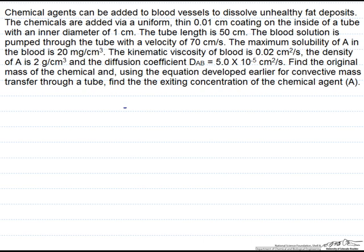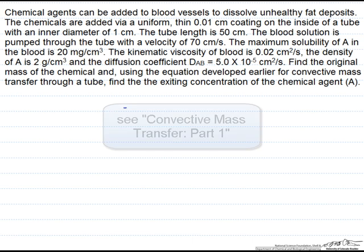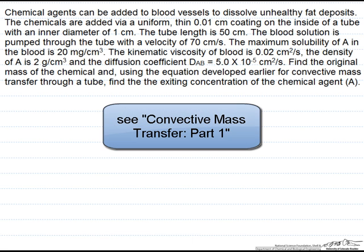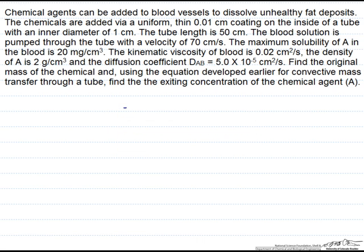In this screencast, we are going to first calculate the mass of a chemical agent that is coating the inside of a tube. Then, using an equation that we developed earlier for convective mass transfer through a tube, we are going to find the exiting concentration of the chemical agent.